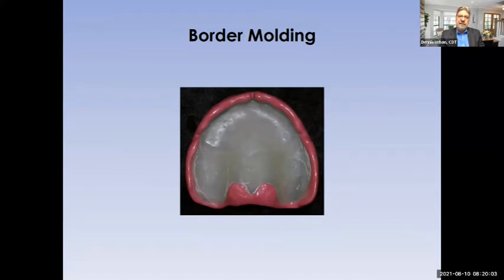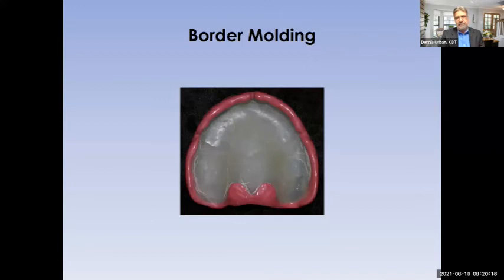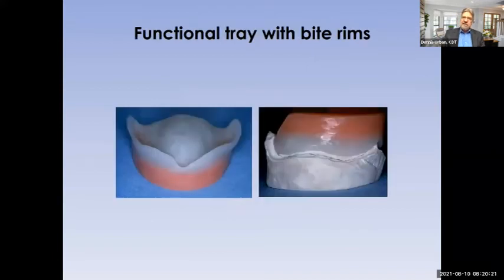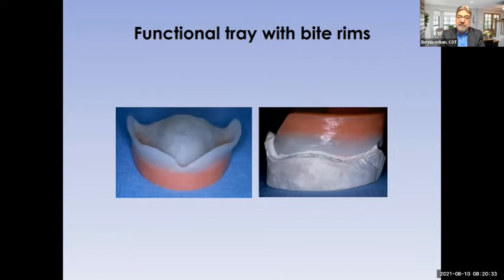After applying adhesive and border molding with monophase or heavy body material, put the tray in the patient's mouth and capture all the musculature. Many doctors still use compound material, and that's fine — you can get an accurate impression with compound. I don't particularly like border molding material in the post-dam area, because we'll be doing a post dam on the model before processing. After border molding, remove the tray, add more adhesive inside, and take the final impression with a medium body material.